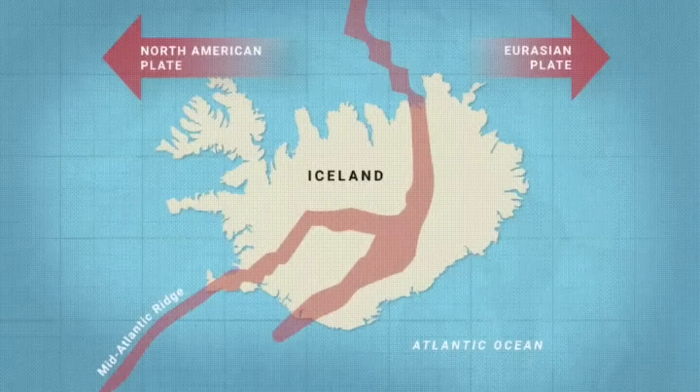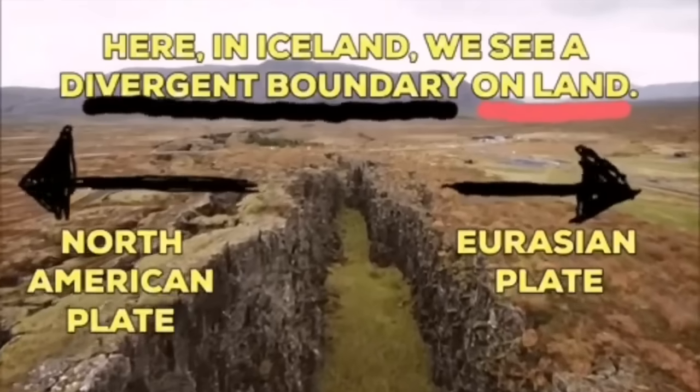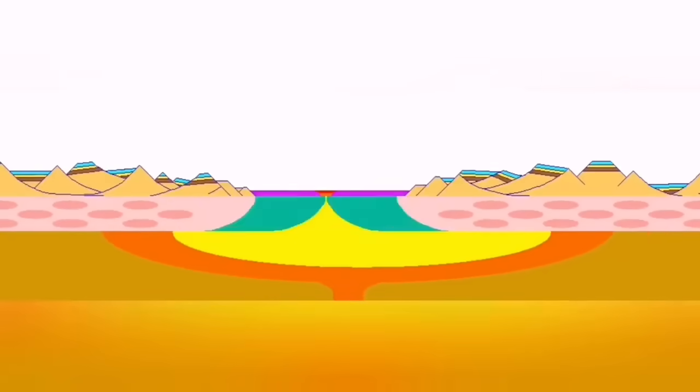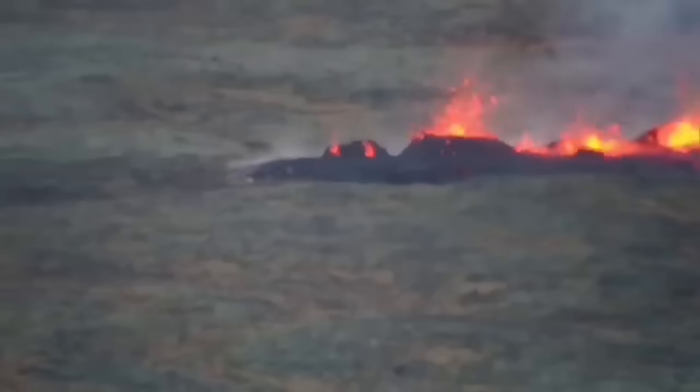Such a thing happens in Iceland on the land. We can see the Eurasian plate and North American plate separating through these grabens—the hollows you see in the middle.